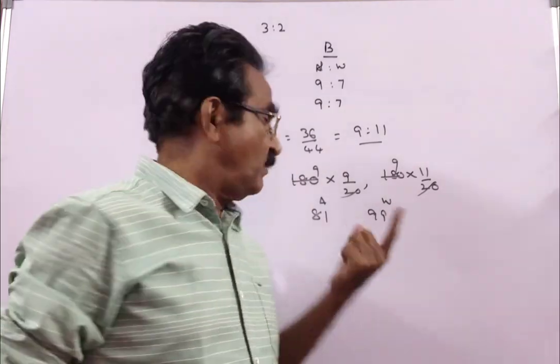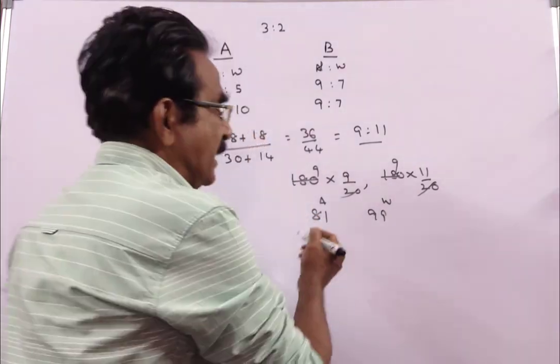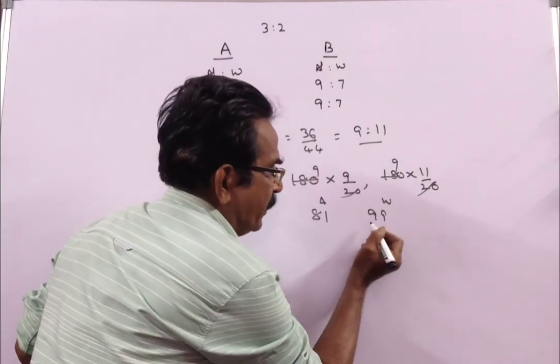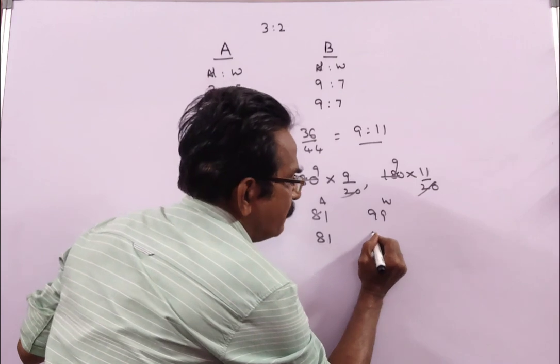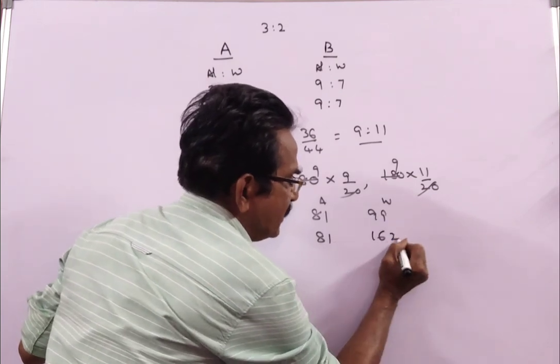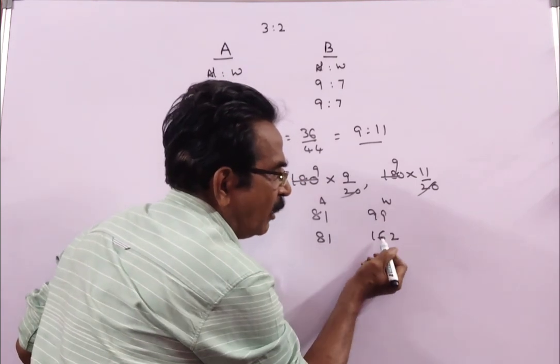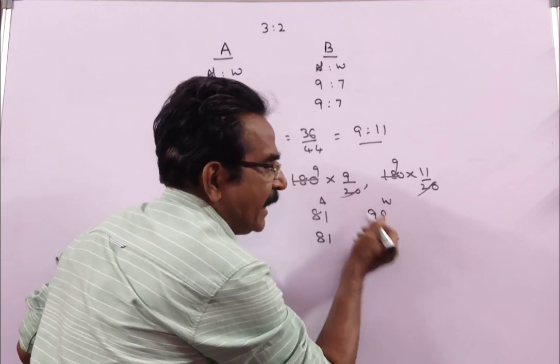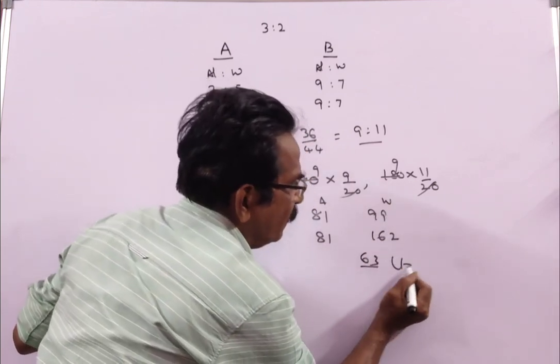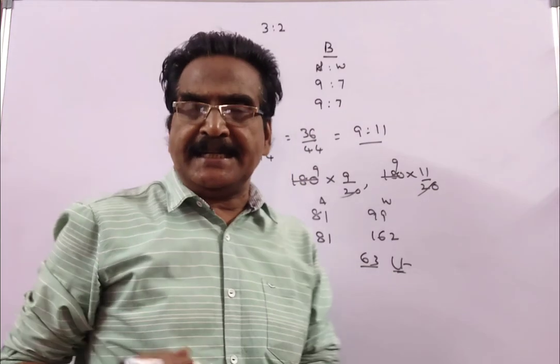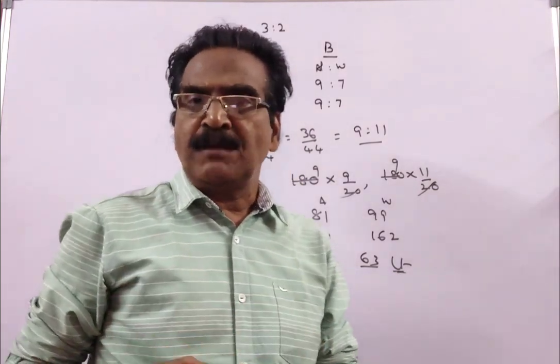Here the question is alcohol contents and water contents must be in the ratio 1 is to 2. If alcohol is 81, water must be 81 is to 162. How much water is to be added? 99 plus 63. So 63 liters of water is to be added to make the ratio 1 is to 2.